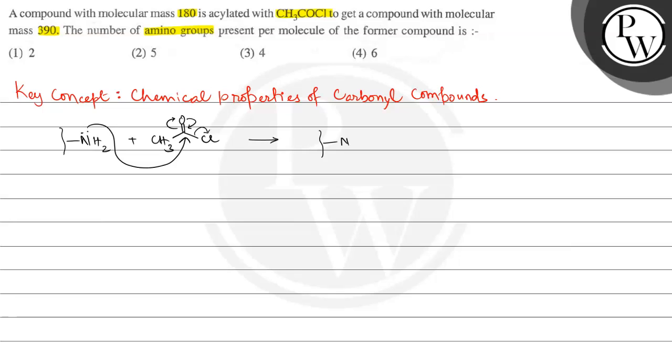And then we get acylated amino group like this: NHC double bond O and here we have CH3, and this can be removed as HCl. So as you can see here, NH2 converts into NHCOCH3.